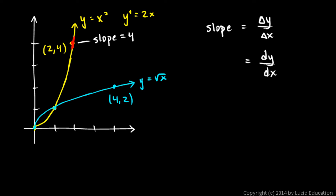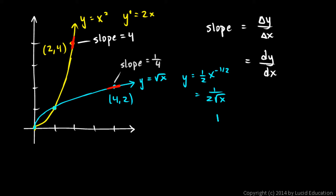Now think about the inverse function at the corresponding point 4 comma 2 — this is the point on the inverse function which corresponds to that point on the original function. The slope there is going to be 1/4. If you don't see that, you could take the derivative: that's x to the 1/2, so y prime equals 1/2 times x to the negative 1/2, or 1 over 2 times the square root of x. When x is 4, this equals 1 over 2 times 2, which is 1/4.